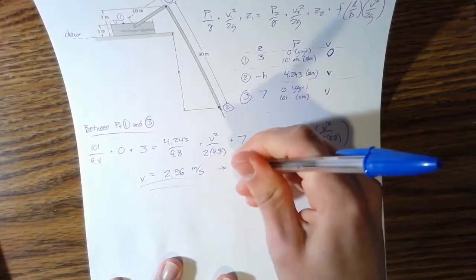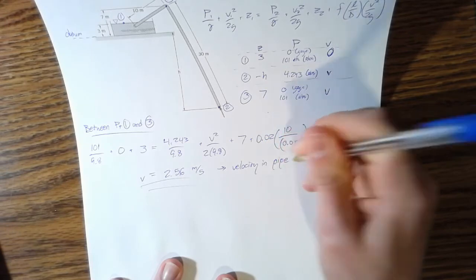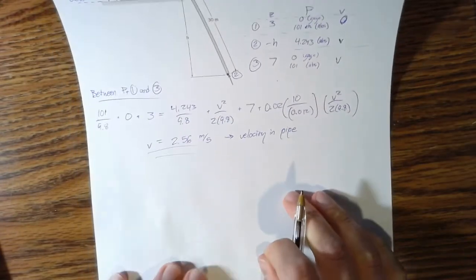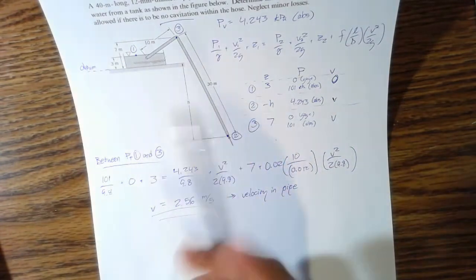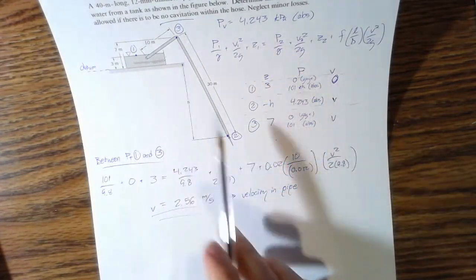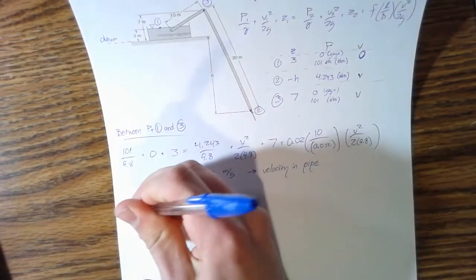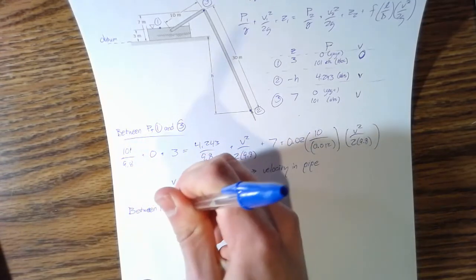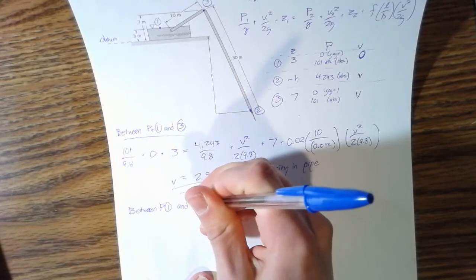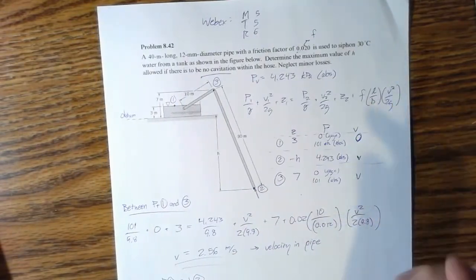From there we can work between point 1 and point 2. Between point 1 and 2, that's going to make our lives a little bit easier because if something's outside the pipe, it's not going to have the effect of this friction factor.